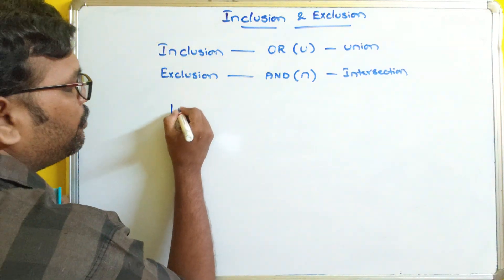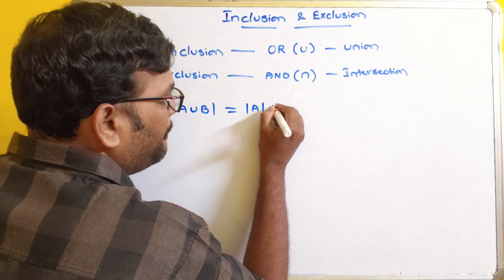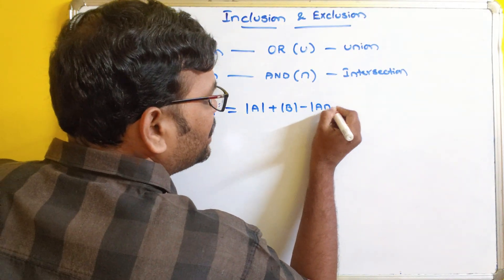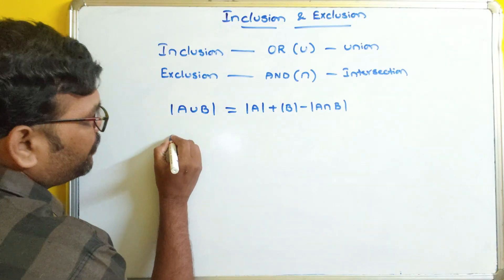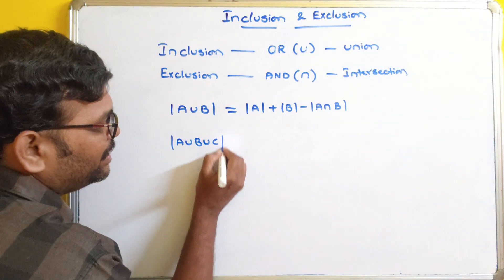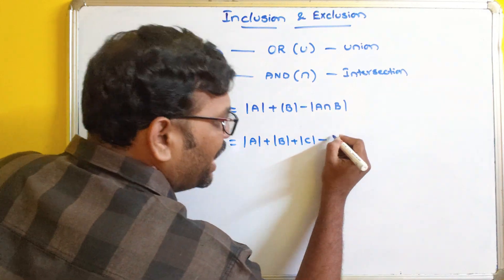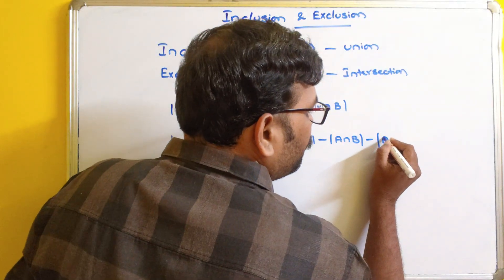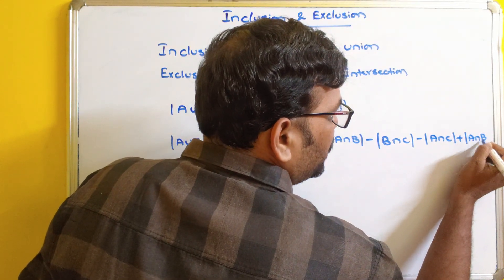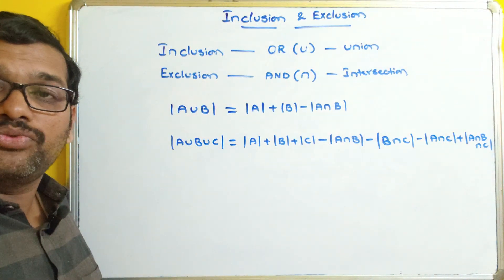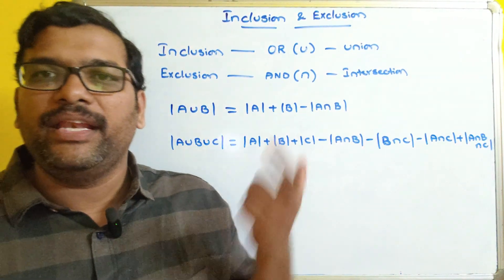The first formula: mod of A union B equals mod A plus mod B minus mod of A intersection B. Similarly, for three sets, mod of A union B union C equals mod A plus mod B plus mod C minus mod of A intersection B minus mod of B intersection C minus mod of A intersection C plus mod of A intersection B intersection C. These are the two formulas we need to remember to solve these problems.